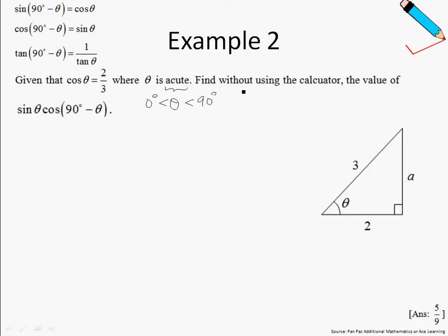Now, how do we find this value, sine of theta multiplied by cosine 90 degrees minus theta? We will be making use of the three identities you see on the top left-hand corner of the screen.